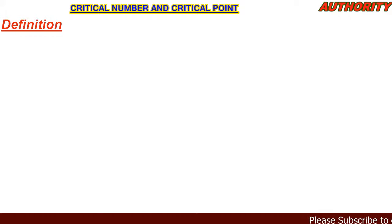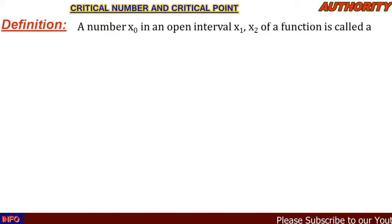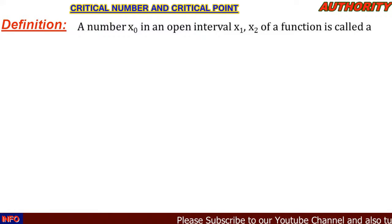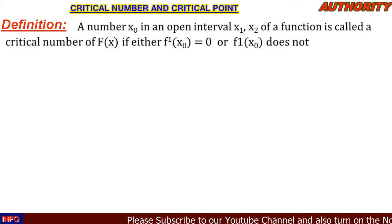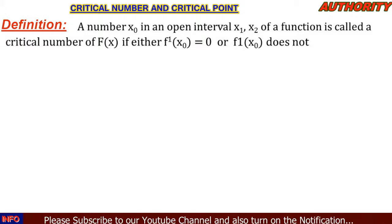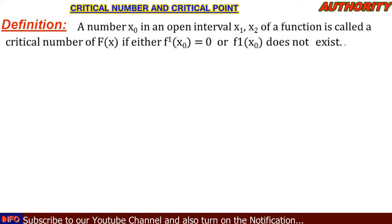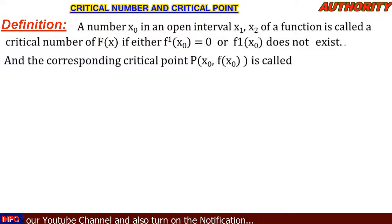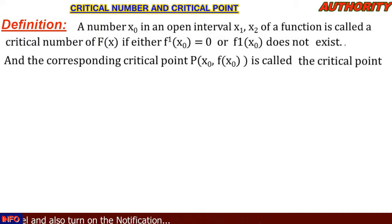Let's talk about critical numbers and critical points. A number x-naught in an open interval (x1, x2) of a function is called a critical number of f(x) if either f prime of x-naught is equal to zero, or f prime of x-naught does not exist. The corresponding point P(x-naught, f(x-naught)) is called the critical point.